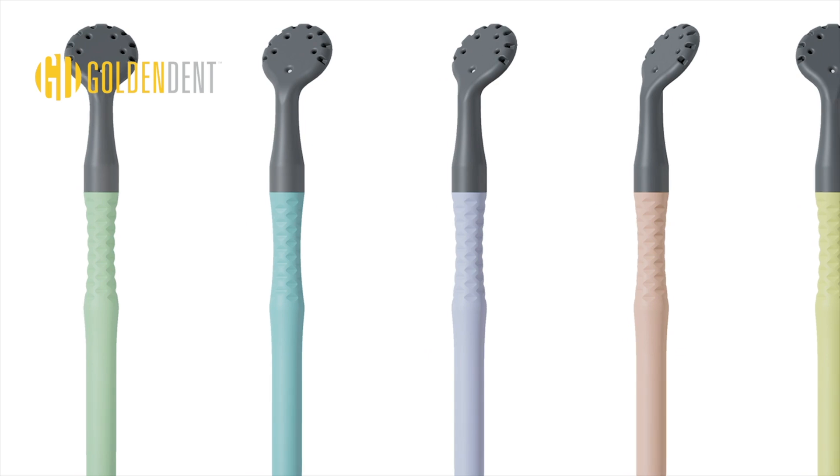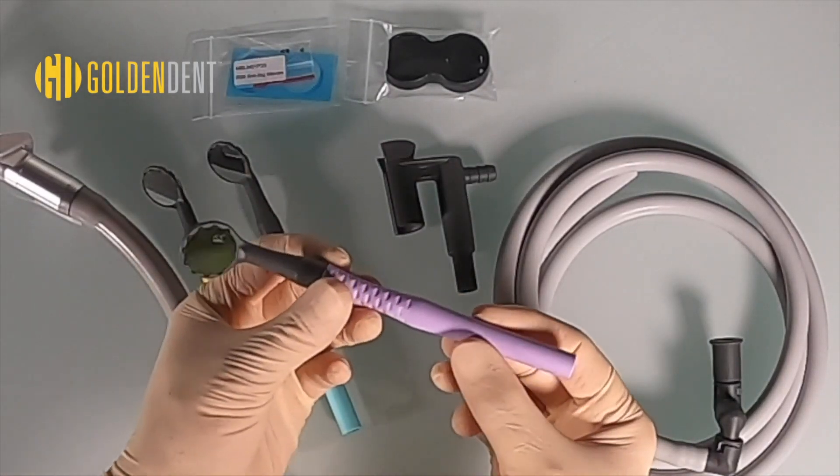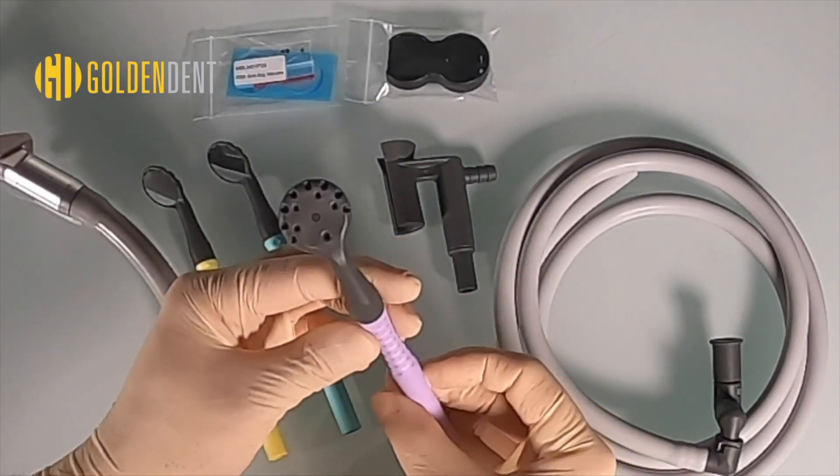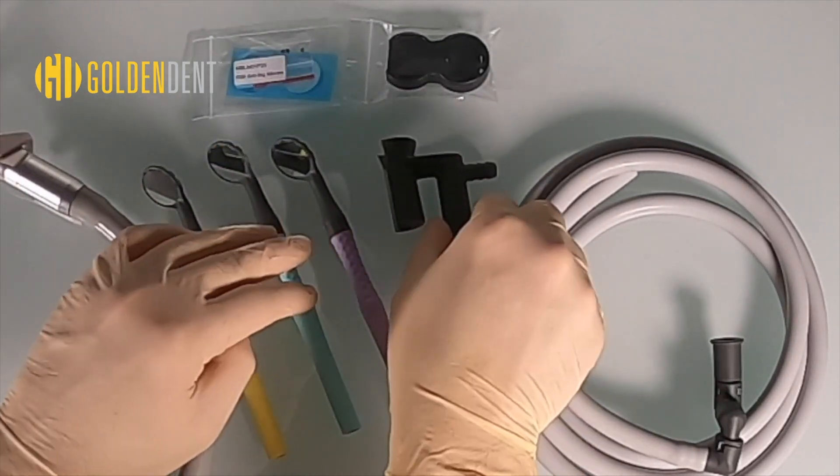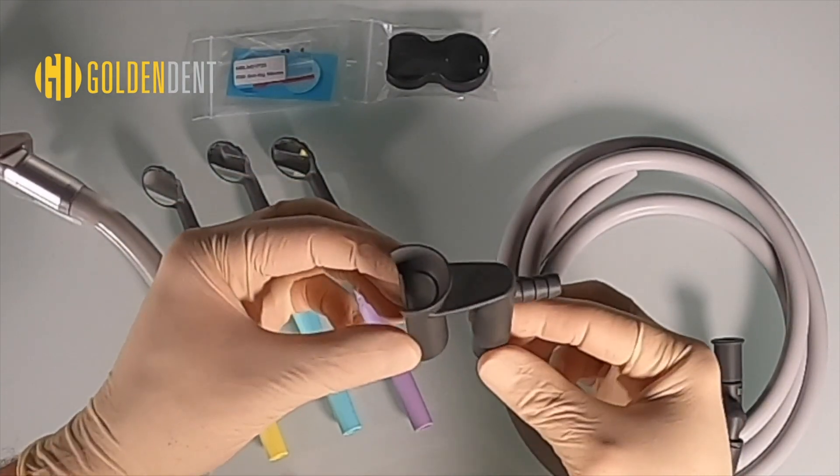This is our M7 HVE suction mirror. It comes in a variety of fun colors. The M7 mirror has 20 suction holes spread over the back and encircling the front of the lens providing powerful and quick evacuation.